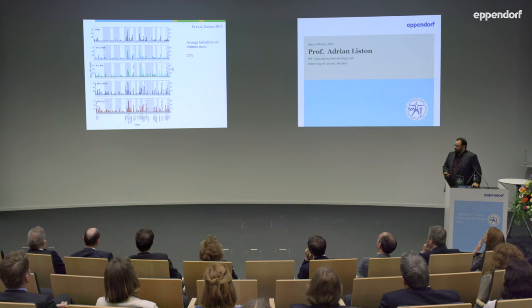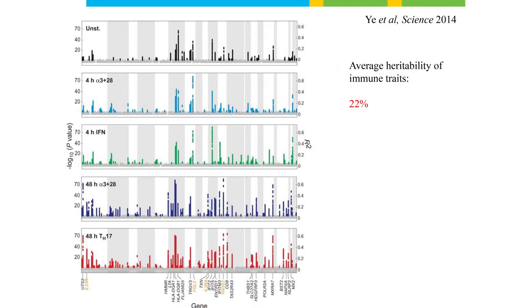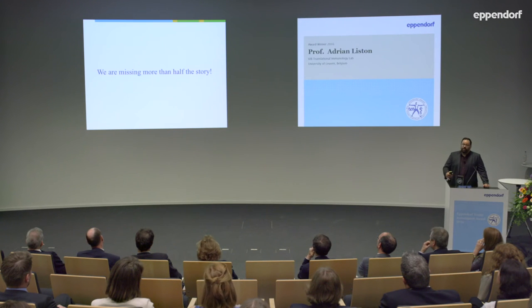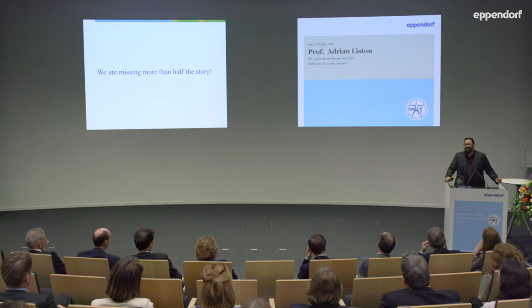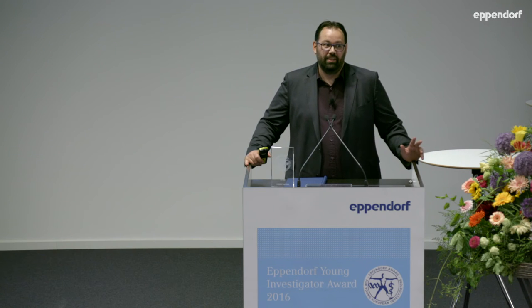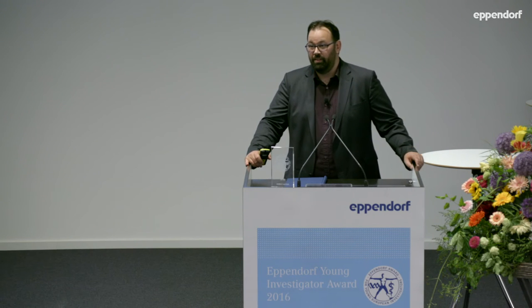Christophe Benoit's group showed that 22% of individual-to-individual variation is genetic. These are really important studies, and our group is also chasing down which variants modify which immunological parameter. But the important thing from these figures is that we're missing more than half the story — if only 20 to 40% of the variation is genetic, that means 60 to 80% is non-genetic. And that's the exciting part, because modifying the environment is going to be much easier than modifying the genotype.